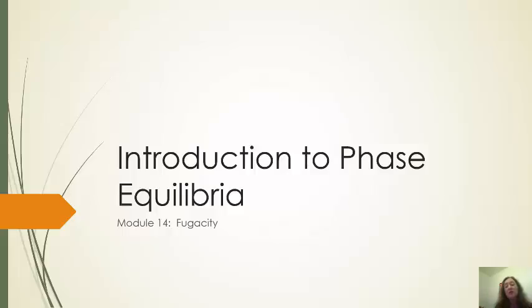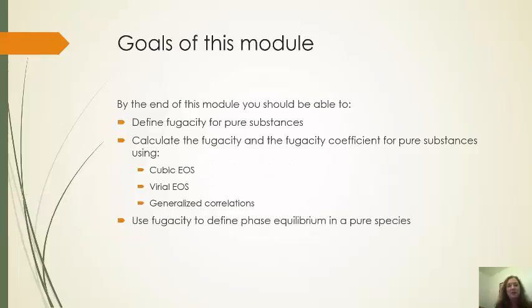Now I am not going to go through a full rigorous derivation at this stage in this course. So our goals here will be to define what fugacity is for a pure substance and then show different ways that we can calculate the fugacity and the fugacity coefficient, which is simply a dimensionless version of fugacity.